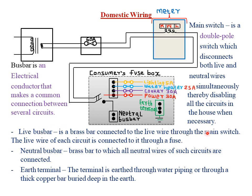The live bus bar is a brass bar connected to the live wire through the main switch, and the live wire of each circuit is connected through a fuse. A fuse helps reduce dangers of electrical shocks because the fuse wire melts when excess current flows due to overheating. The neutral bus bar is a brass bar to which all the neutral wires of circuits are connected. The earth terminal is earthed through water piping or a thick copper bar buried deep in the ground.